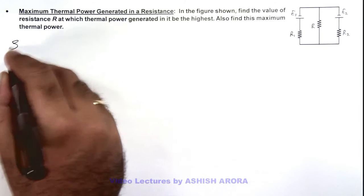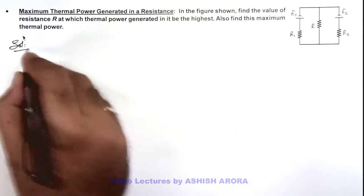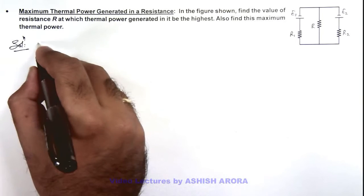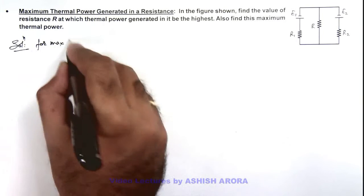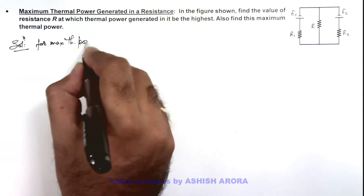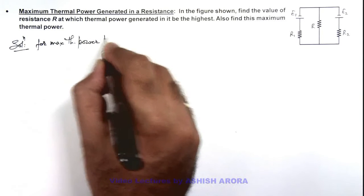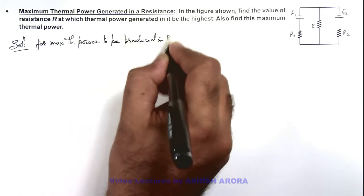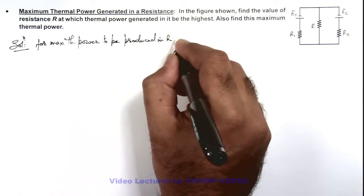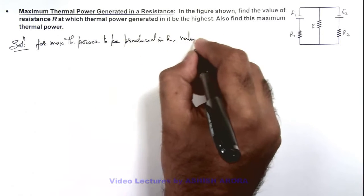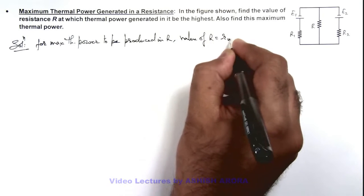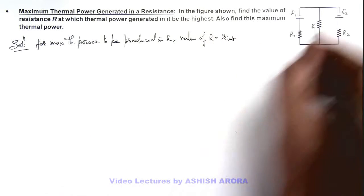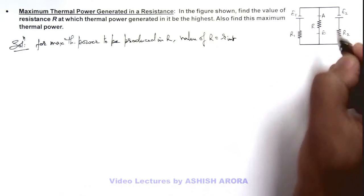We know well by the maximum power transfer theorem, which we have already studied in concept videos, that for maximum thermal power to be produced in R, the value of R should be equal to the internal resistance of the circuit — that is, the Thevenin's resistance of the circuit across terminals A and B.